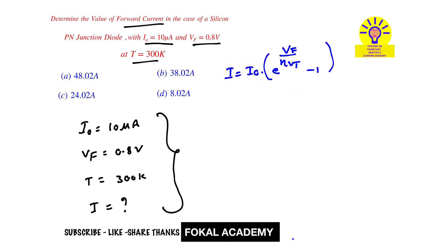So in this I0 is given as 10 micro amperes and VF is given as 0.8 volts. What is the VT and Eta value for the given problem? So VT means KT by Q and Eta, here the given PN is silicon. So for silicon Eta value is 2. Suppose if Germanium is given then Eta value is 1.